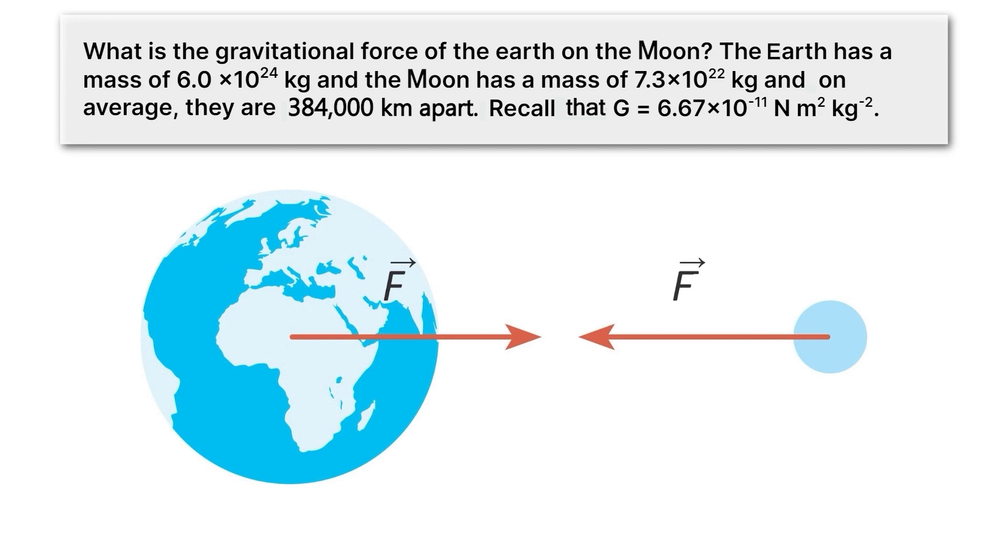And the Moon has a mass of 7.3 times 10 to the 22nd kilograms. And on average, at least, this changes some, they are spread apart by 384,000 kilometers. Recall that this big G here is equal to 6.67 times 10 to the minus 11th and some units.